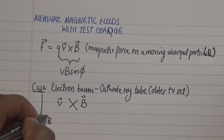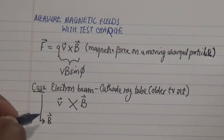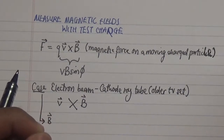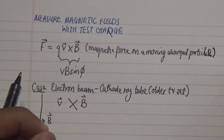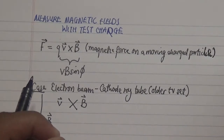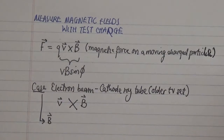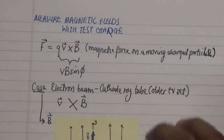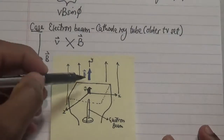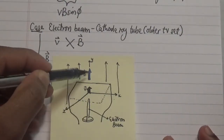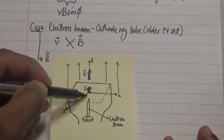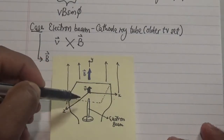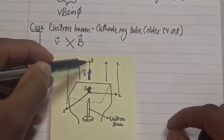Now let's look at the case where a magnetic field is present and the electron beam is shot from the electron gun. Will the beam deflect or not? This comes into play when the beam is parallel or anti-parallel to the field. In this specific case, the beam is shot in a parallel direction to the magnetic field, so the velocity is parallel to the magnetic field.